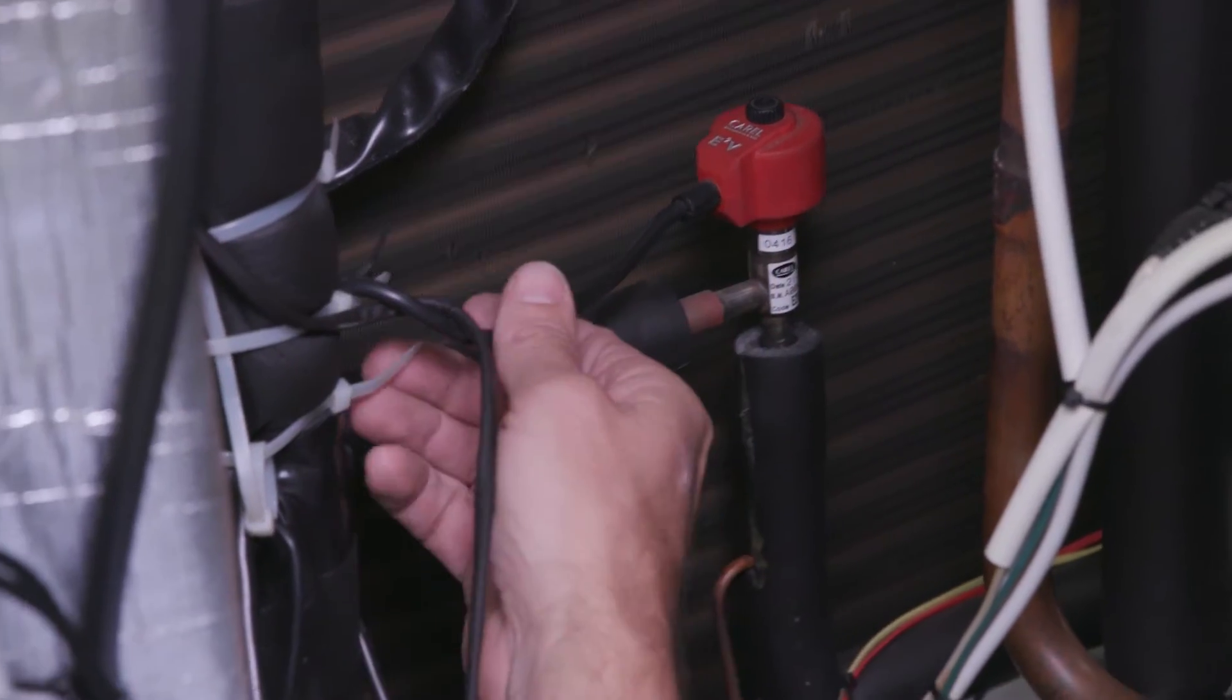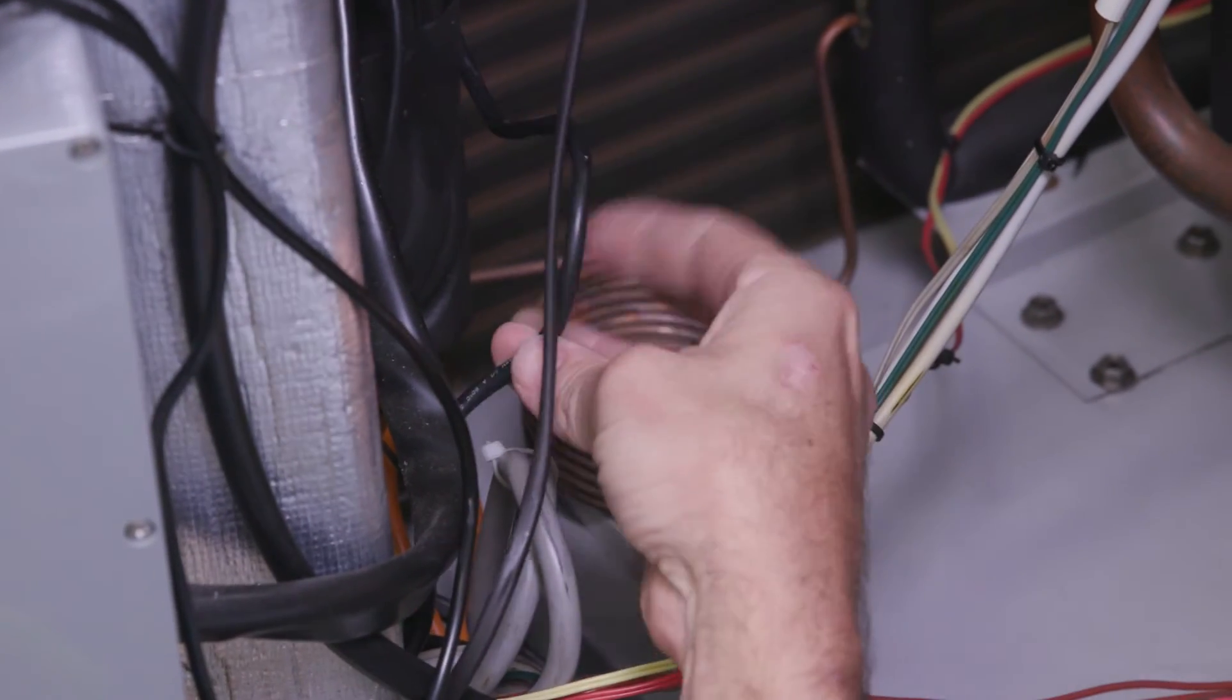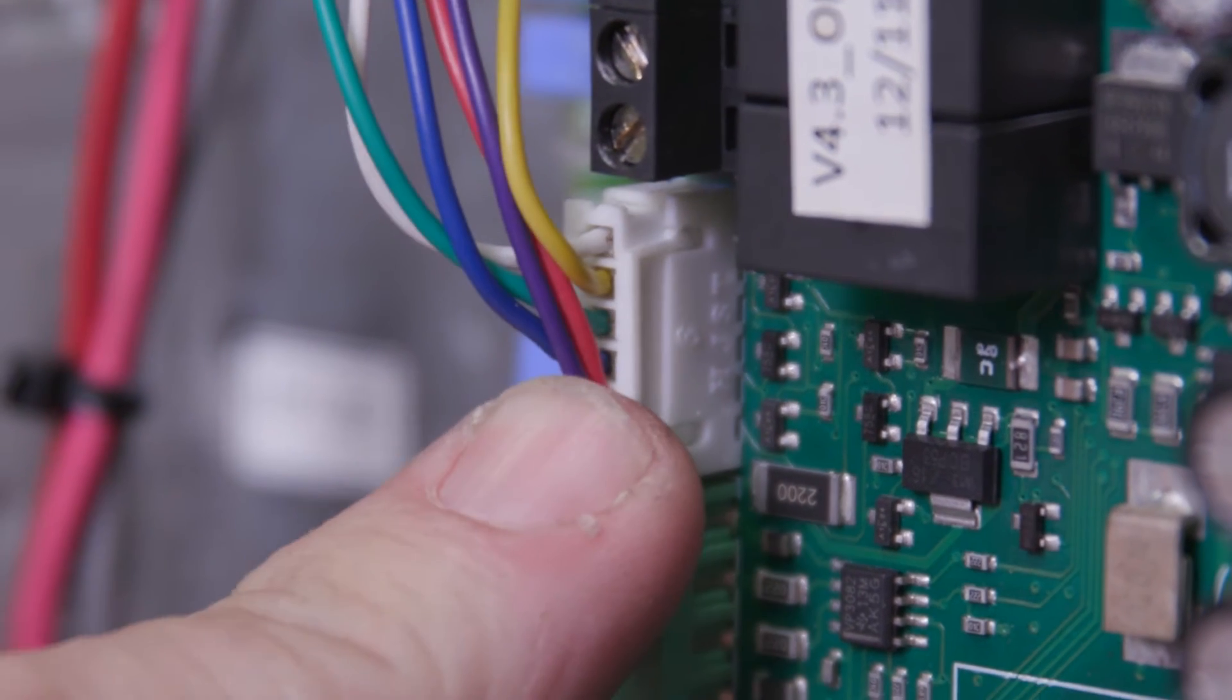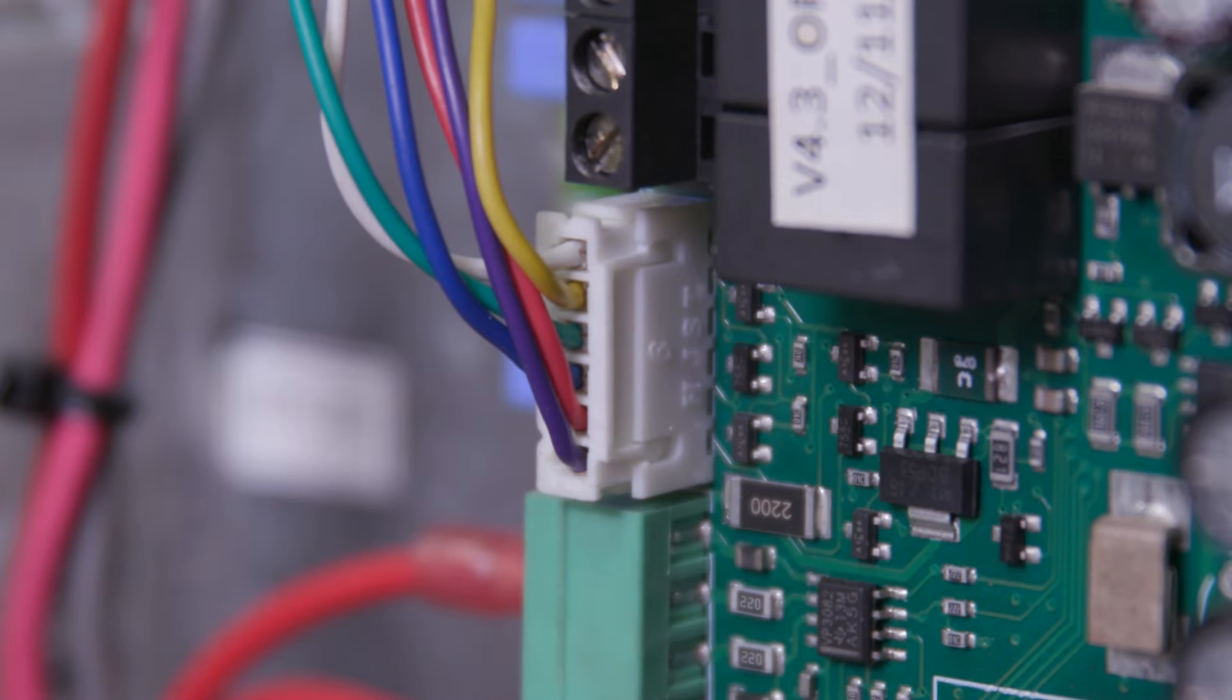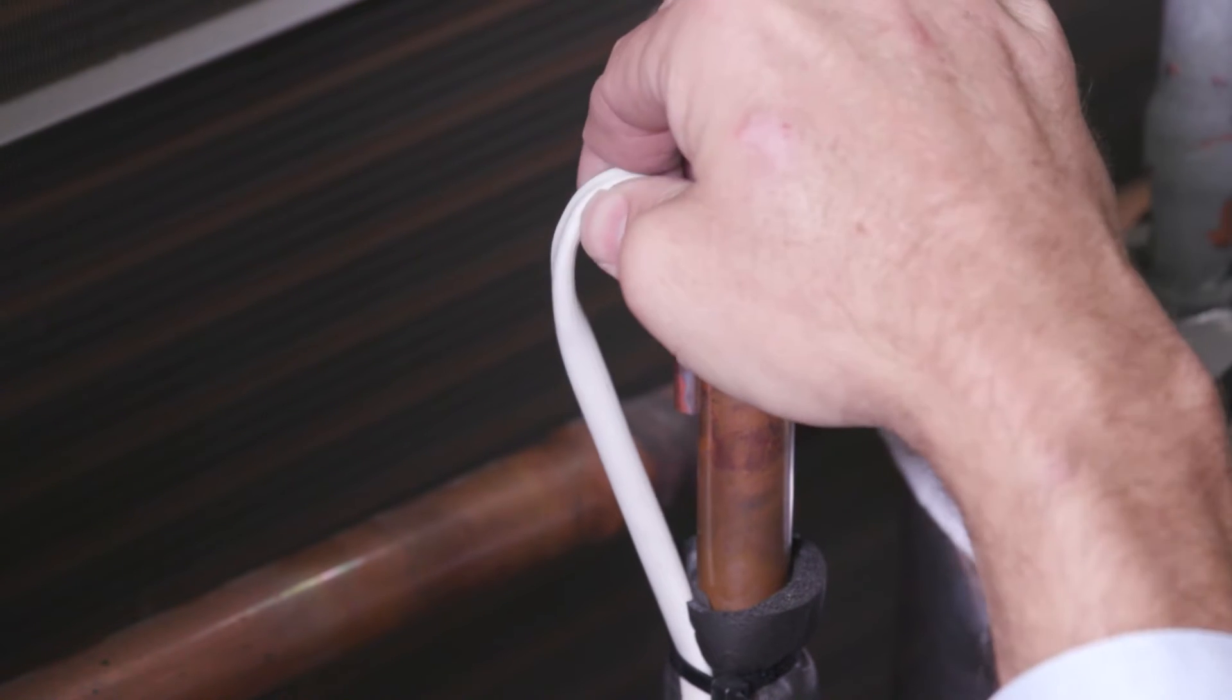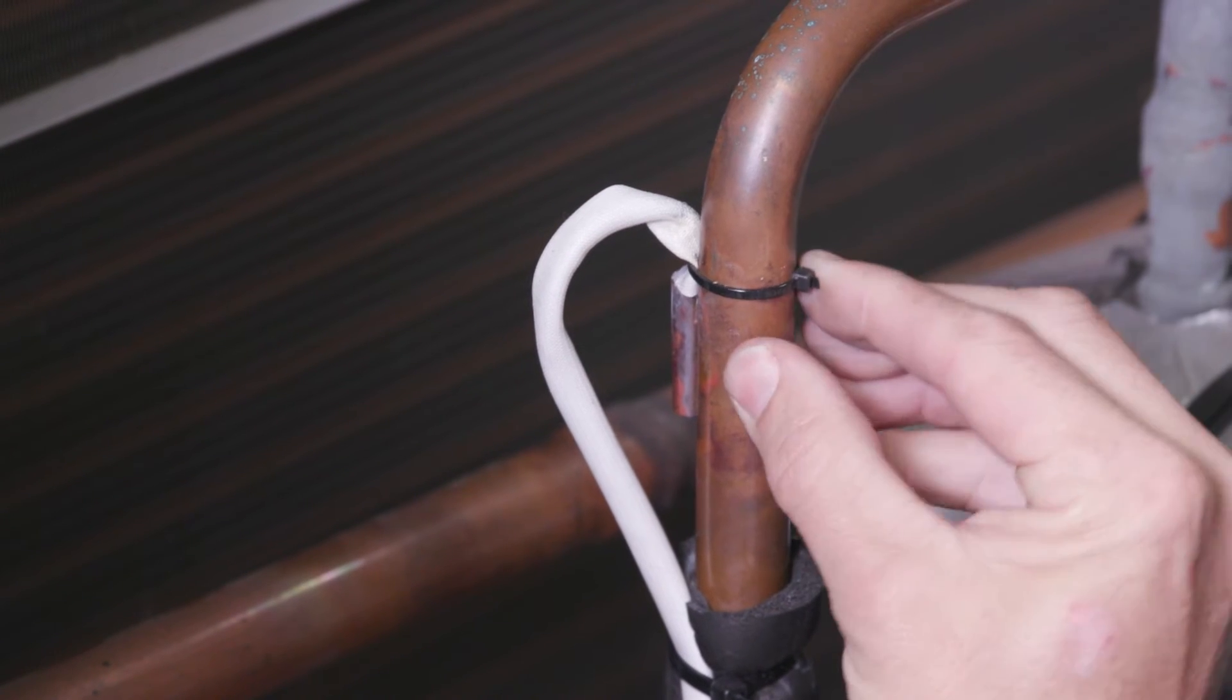Check the correct orientation of electronic expansion valve 1 and 2 as per the wiring diagram by tracing the cables. Ensure that the EEV plugs are firm and secure. Check that the sensor probes are tight and secure to the pipework. Use a cable tie to ensure secure connection if at all in doubt.